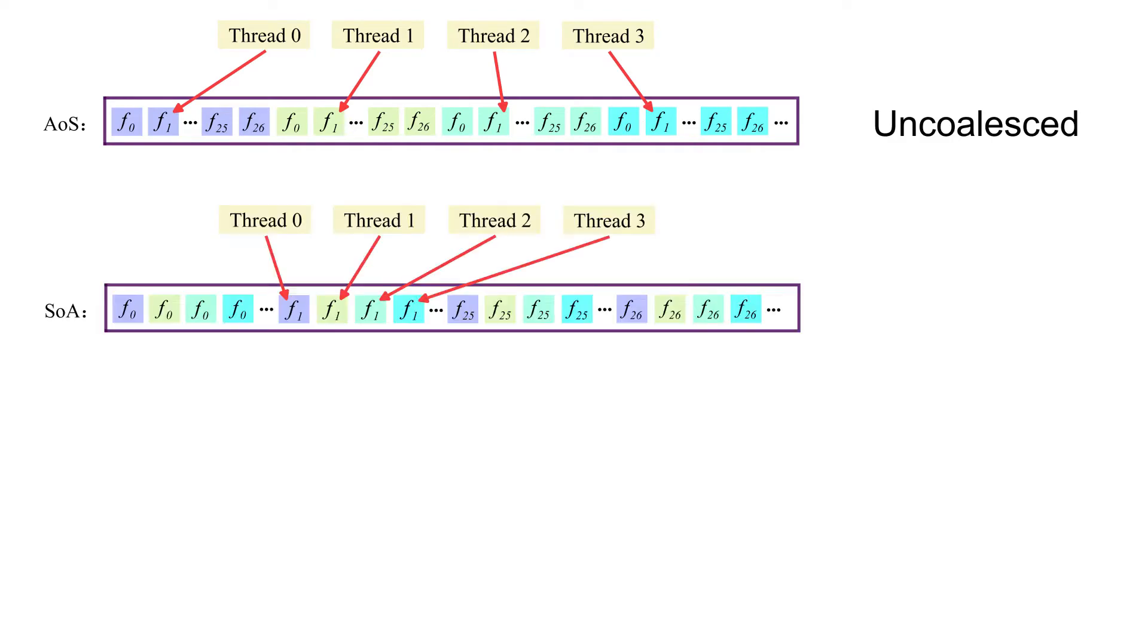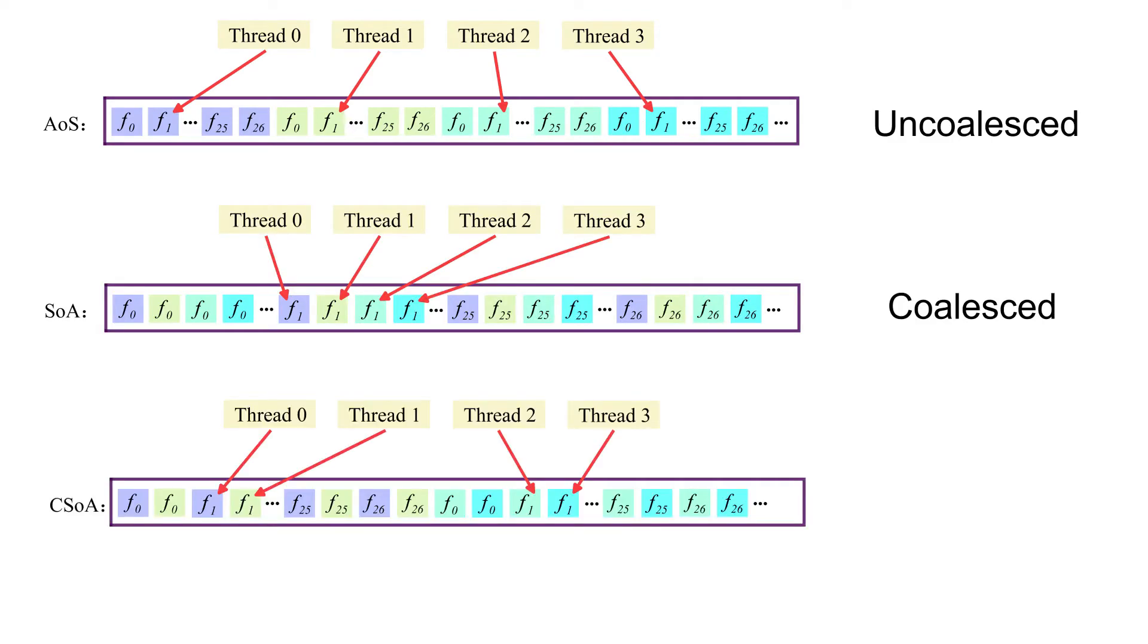Fluid nodes can be organized in memory with AOS, SOA and CSOA data layouts, where CSOA has been suggested due to coalesced memory access and improved caching.